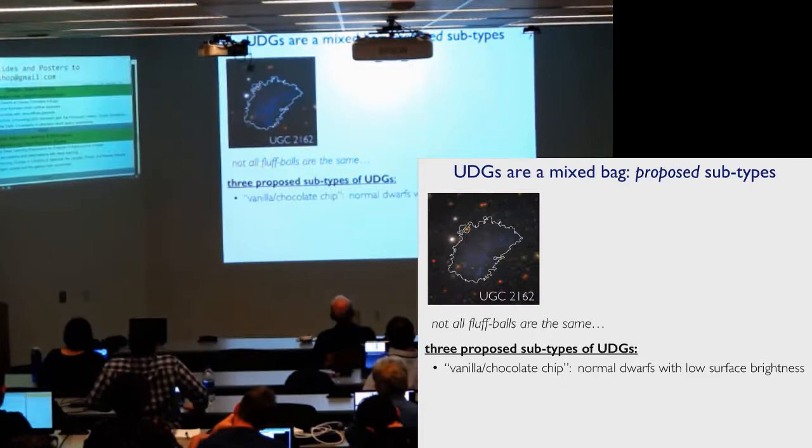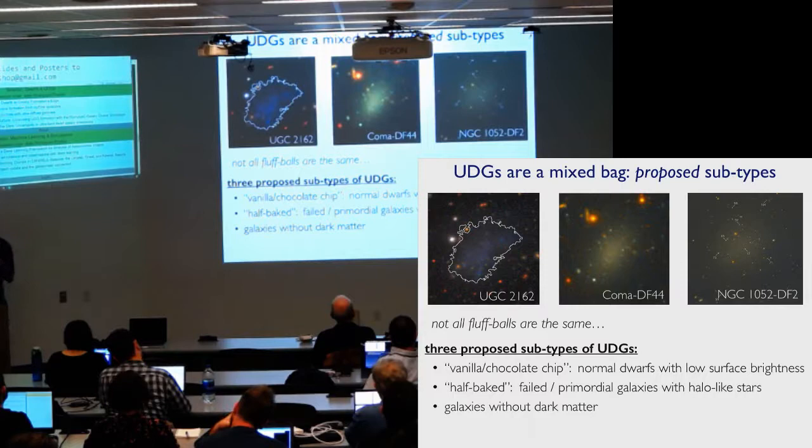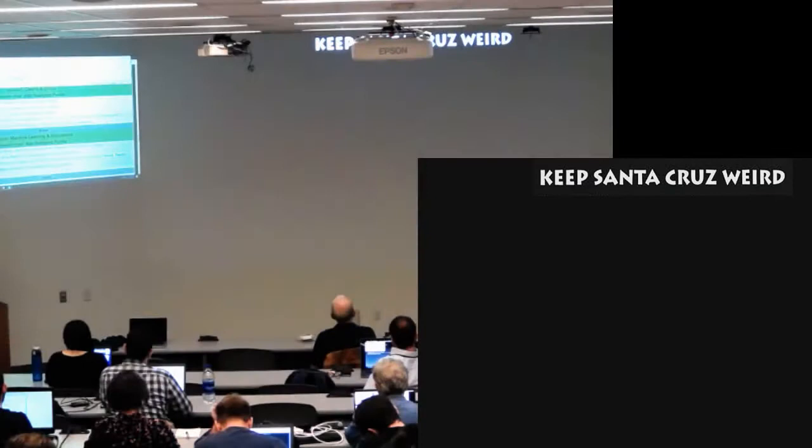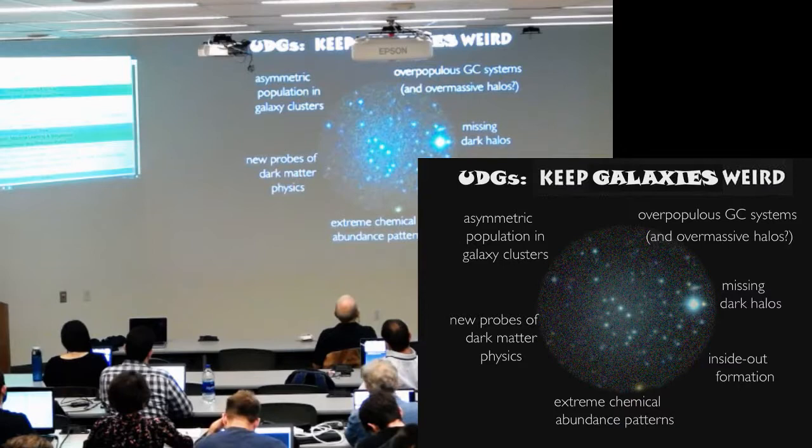There seems to be a lot of spread in the properties. So let me just close with this picture of we seem to have three types of UDGs: these normal dwarfs, low surface brightness; these half-baked galaxies; and this even more puzzling low dark matter systems. So I guess the overall motto is from Santa Cruz, we have a local motto, keep Santa Cruz weird, and we'll say let's keep galaxies weird with UDGs. So a lot of weird properties that we would like to understand. So thanks for your attention.